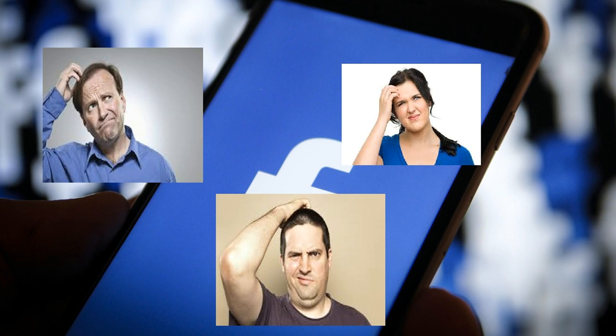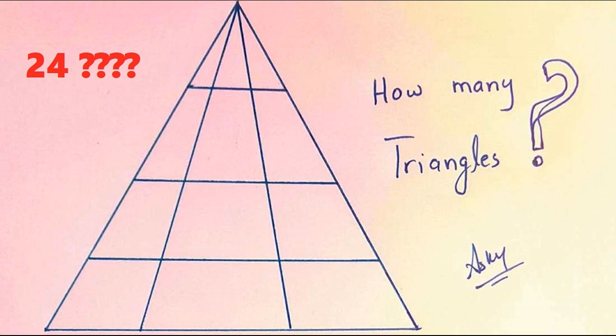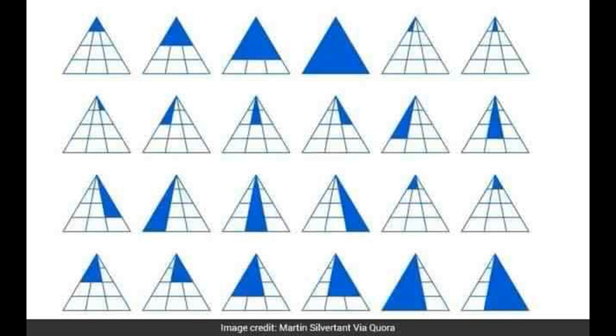Most people on Facebook agreed that the answer is 24, with each row containing 6 triangles. Mathematician Martin Silverton even presented this handy chart for explanation where he has given 24 triangles from this picture.